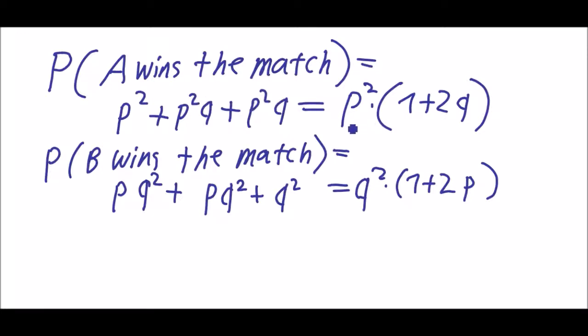We found out that p squared times 1 plus 2q, where q is the probability that B wins a set, is the solution to this problem. We can refine it a little bit because q is 1 minus p.